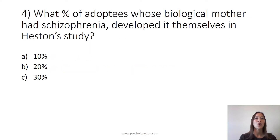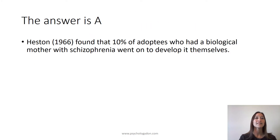Question 4: What percentage of adoptees whose biological mother had schizophrenia developed it themselves in Heston's study? Is it A: 10%, B: 20%, or C: 30%? The answer is A. Heston found that 10% of adoptees who had a biological mother with schizophrenia went on to develop it themselves.